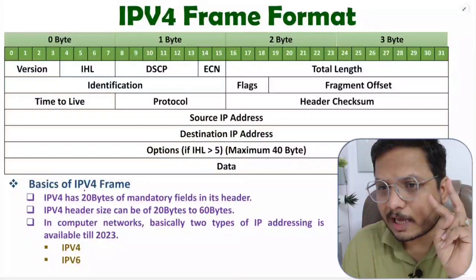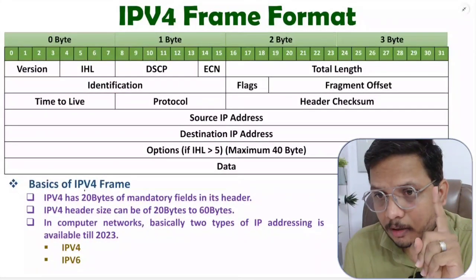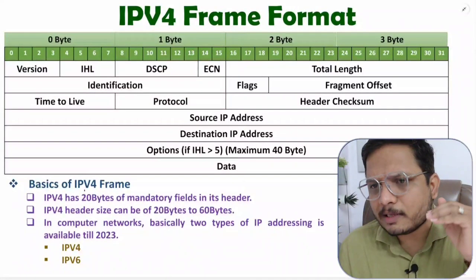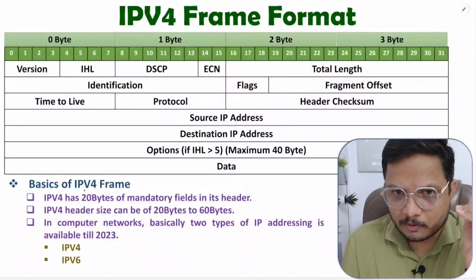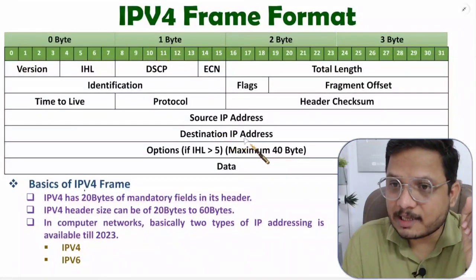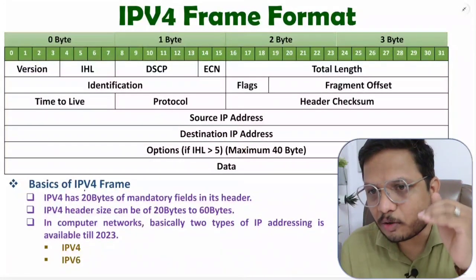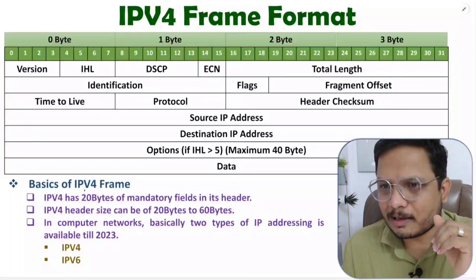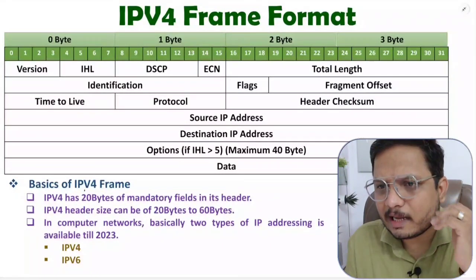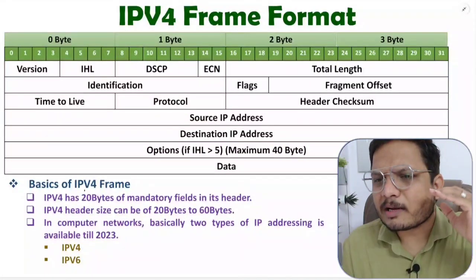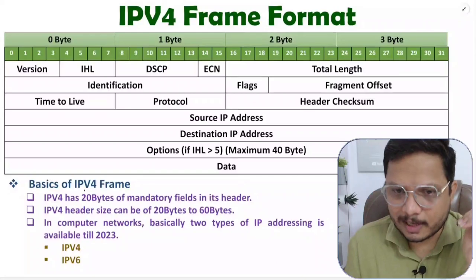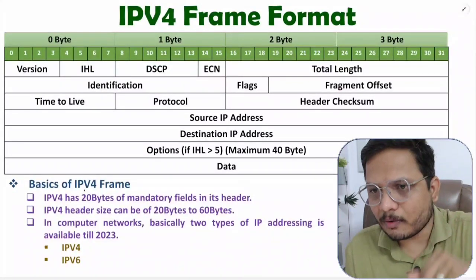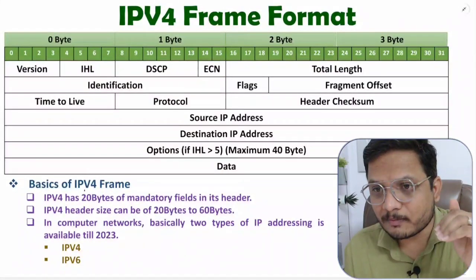There are two types of Internet Protocol: IPv4, which I'm explaining in this video, and IPv6. Right now we are running out of IP addresses because with IPv4, source IP and destination IP are each 32 bits, giving us 2 to the power 32 IP addresses. Our global population is around 785 crore, so we're running out of addresses. IPv6 will dominate in the future, but right now in 2023, 98% of usage is IPv4.